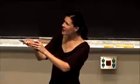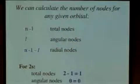What you find with the s orbital, and this is general for all s orbitals, is that all of your nodes end up being radial nodes. That has to be the case, because l equals zero for s orbitals.